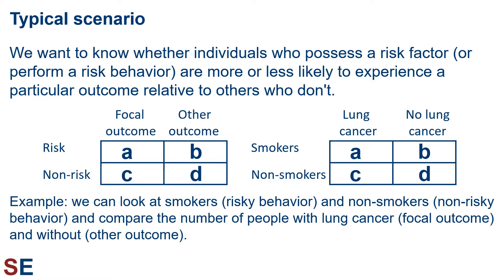Looking at our two groups — smokers, the risky behavior, and non-smokers, the non-risky behavior — we compare the number of people in each of the outcome groups, which are having lung cancer, the focal outcome, and not having lung cancer, the other outcome. Obviously, in this case, we expect that the ratios of A to B and C to D to be different, but how exactly do we calculate this?